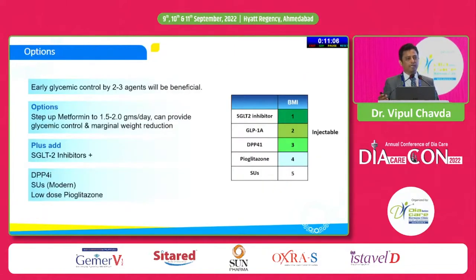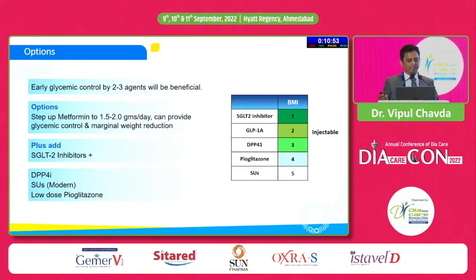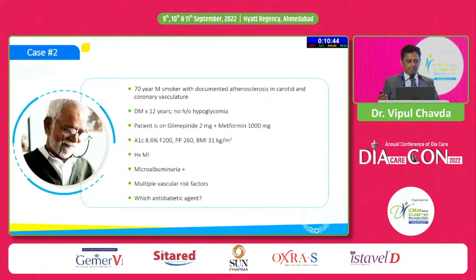In this patient, focusing on BMI, we should consider SGLT2 inhibitors, GLP-1 RA, DPP4 inhibitors, and AGIs. With the availability of oral semaglutide, we can provide the full benefit of that molecule. Early glycemic control with 2–3 agents is beneficial as shown by the VERIFY trial. We should first uptitrate metformin to 2g, which provides glycemic control and marginal weight reduction, and add an SGLT2 inhibitor with a GLP-1 RA.